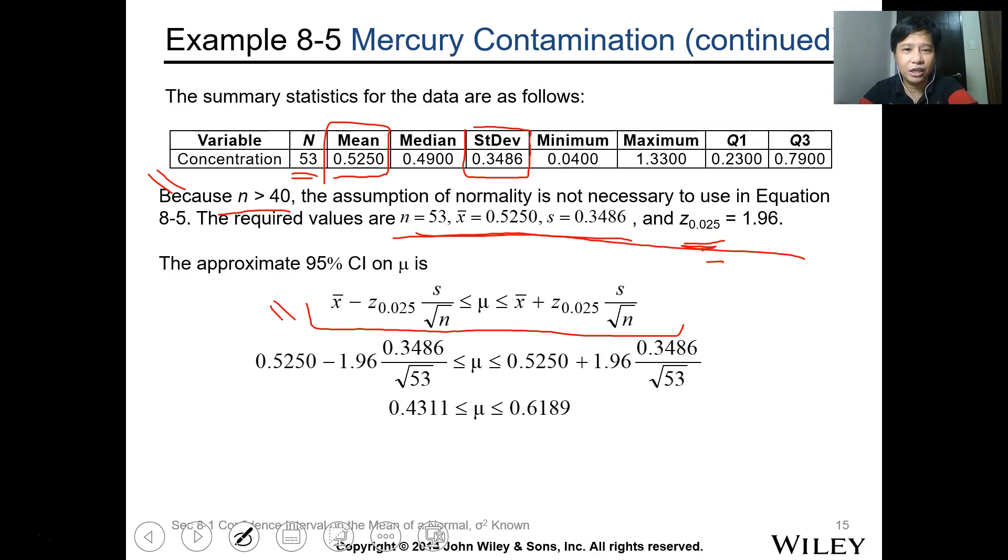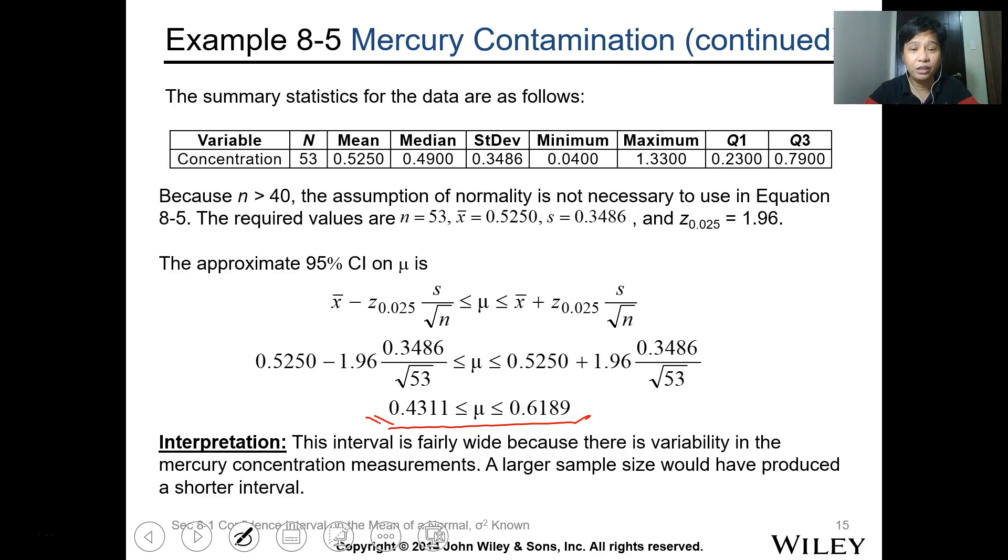We can conclude that we can use the normal distribution because of the large sample. Substitute here, this is the mean, negative here, positive here, 1.96 and 1.96. This is the standard deviation of the sample and square root of 53. Upon calculation, we get the upper and lower limit. This is the upper limit, this is the lower limit. What does it mean? The interval is fairly wide because there is variability in mercury concentration. It's very large for mercury concentration. A large sample size would have produced a shorter interval. Even though it's already 53, the interval we got is still large.